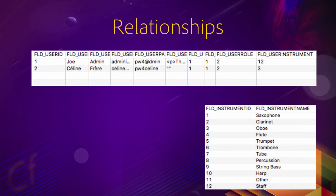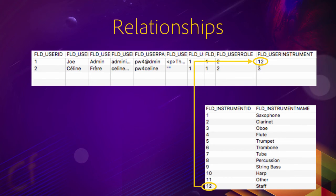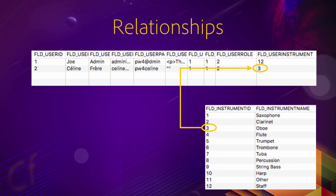Let's introduce another table — the instruments table. The instruments table has two fields, two columns: one is the ID of the instrument and one is the name of the instrument. Looking at the users table, you can see the last field is the instrument that the user plays. The first user, JoeAdmin, has instrument number 12, which corresponds to number 12 in the instruments table. So there is a relationship between the two tables established by that number. JoeAdmin does not actually play an instrument — he is part of the staff of the band. The second user, Celine, plays instrument number three, which corresponds to oboe in the instruments table. So we know that Celine plays oboe in the band.